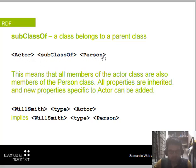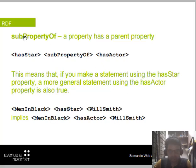Because Actor is a subclass of Person, all members of the Actor class are also members of the Person class. All properties are inherited, and new properties specific to Actor can be added. For example, 'Green Smith type Actor' implies 'Green Smith type Person'. Sub-properties also exist — 'hasStars' is a sub-property of 'hasActor'.